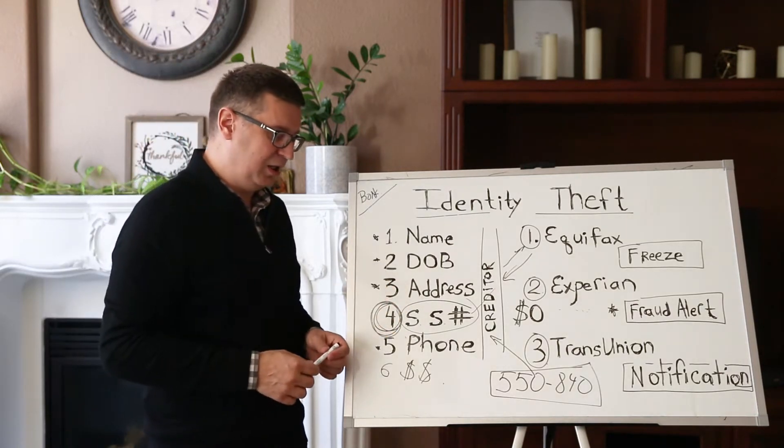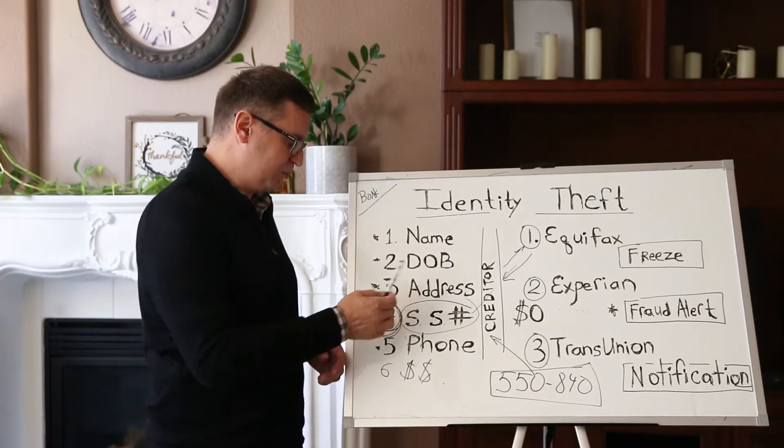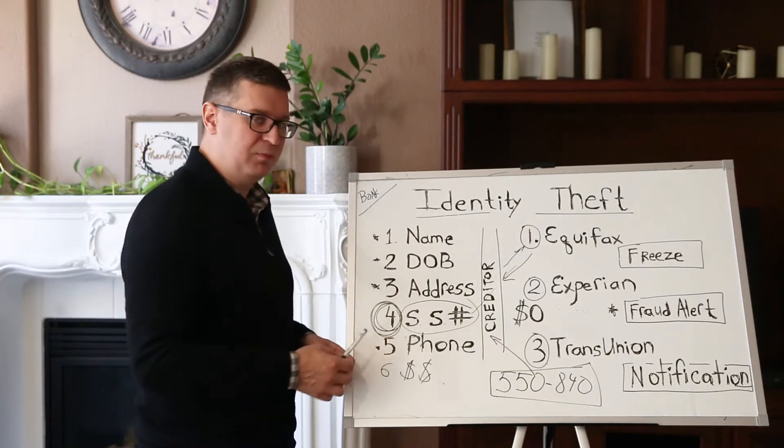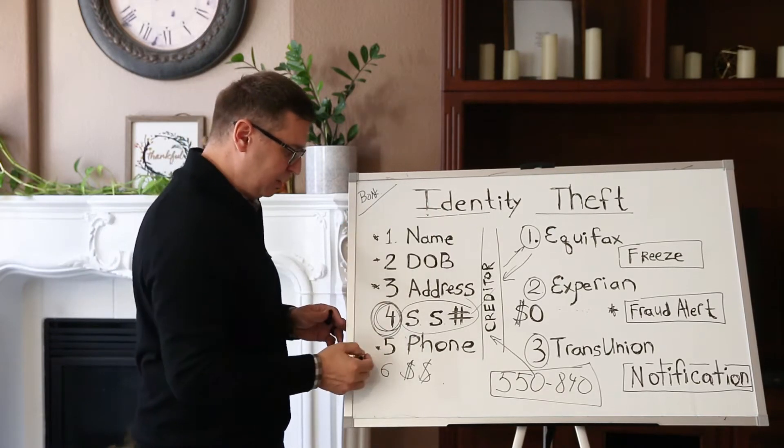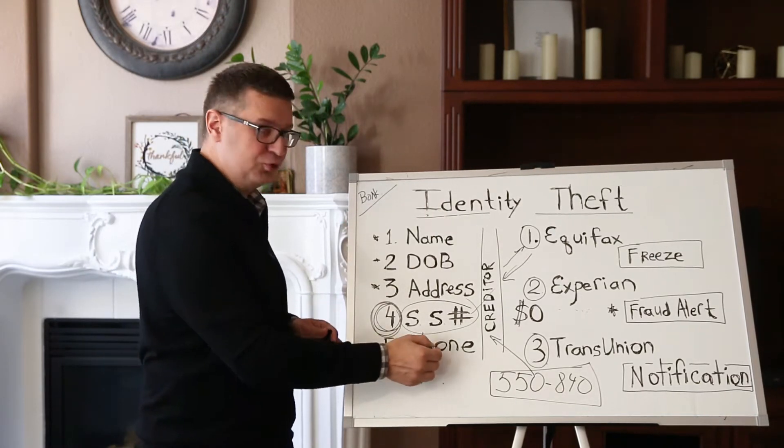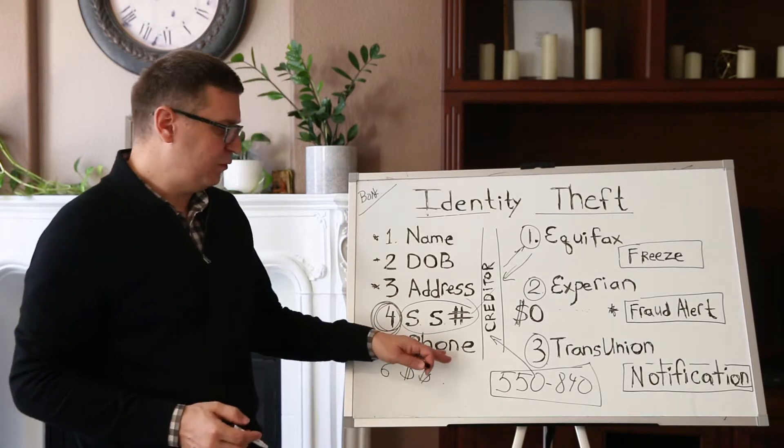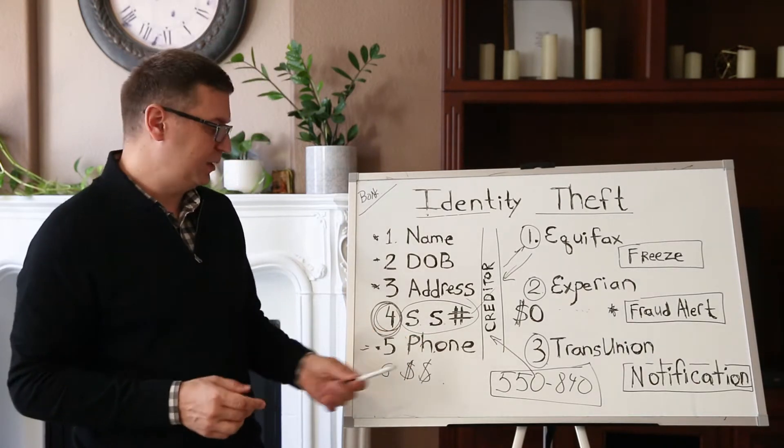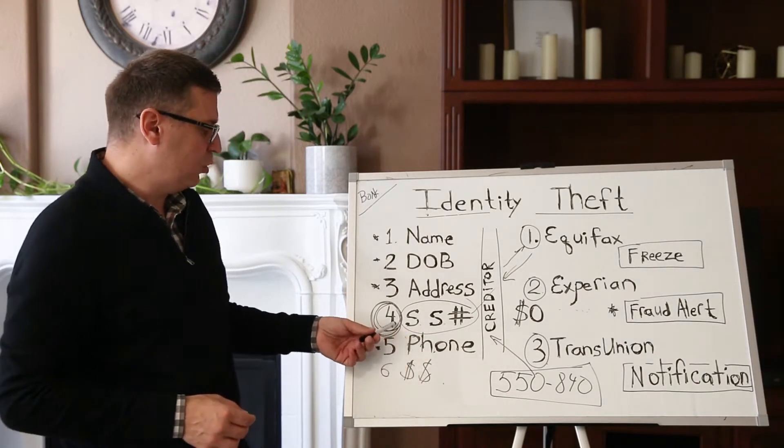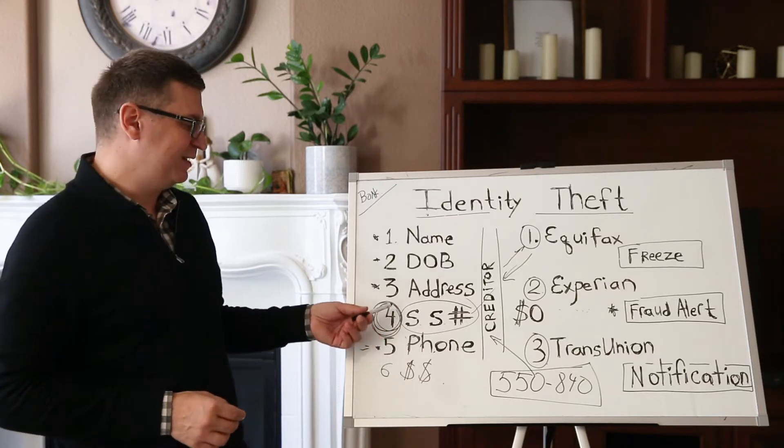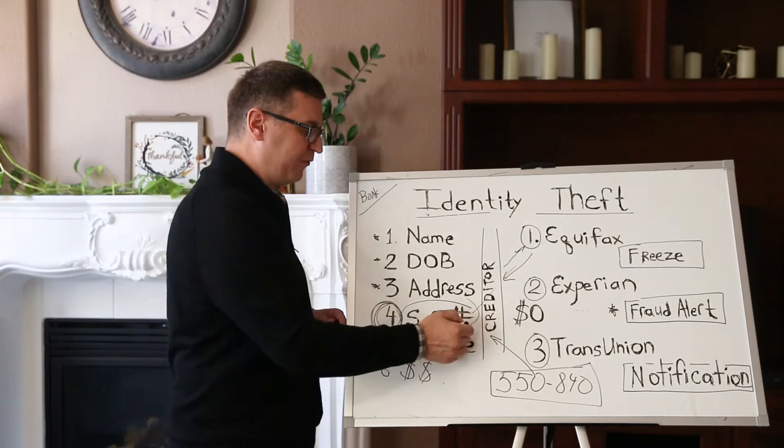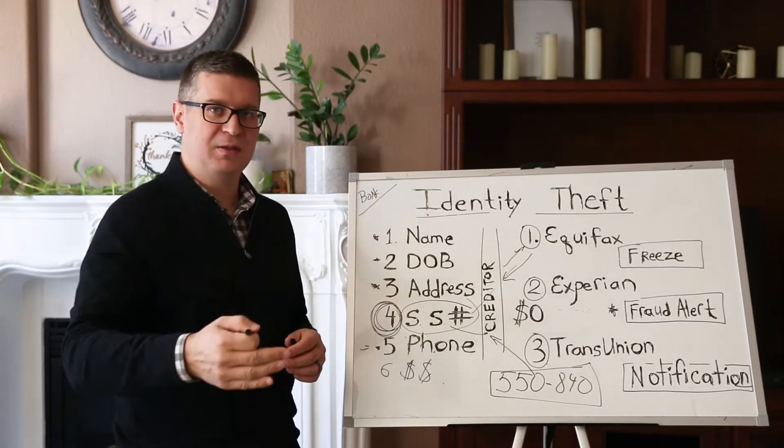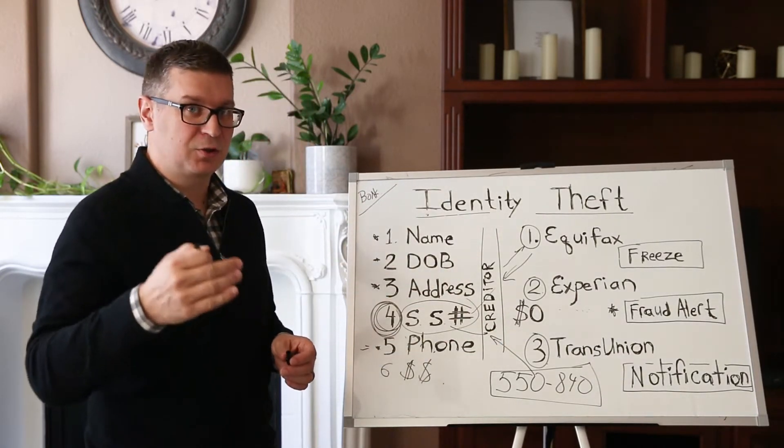It's also hard to hide addresses because addresses are public information. Phone number is not too hard to hide either, but people who steal identity can actually apply for credit using their own phone number. The most important thing that we have to protect is our social security number, because when people apply for credit, the creditor uses social security to see what is our FICO score.